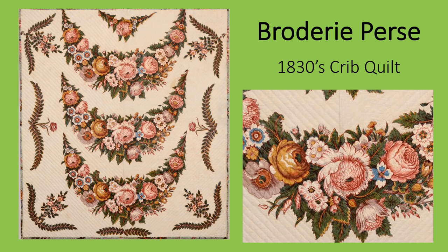This is an example of an 1830s broderie perse crib quilt. The swags of blooms were cut from a chintz fabric and sewn on top of the off-white background, as were the leaves and bouquets around the edges. The chintzes could be very expensive, so using them in this way was often a way to reduce expense — the images could be spread out on the background so less yardage was needed. The workmanship in this quilt is so good that it can be difficult to comprehend that the flowers were applied to the background.